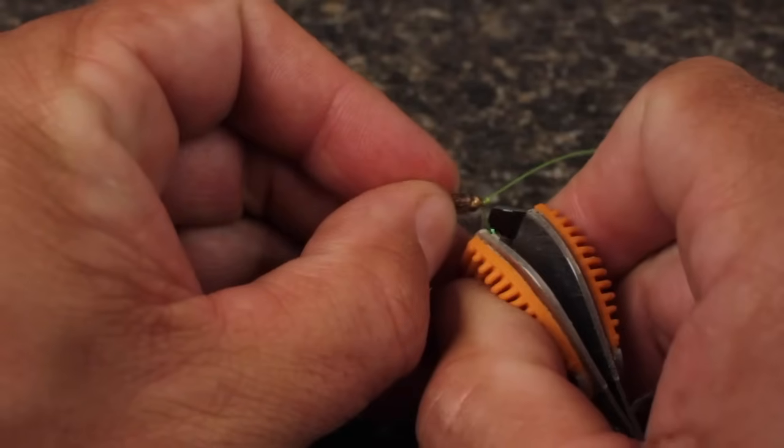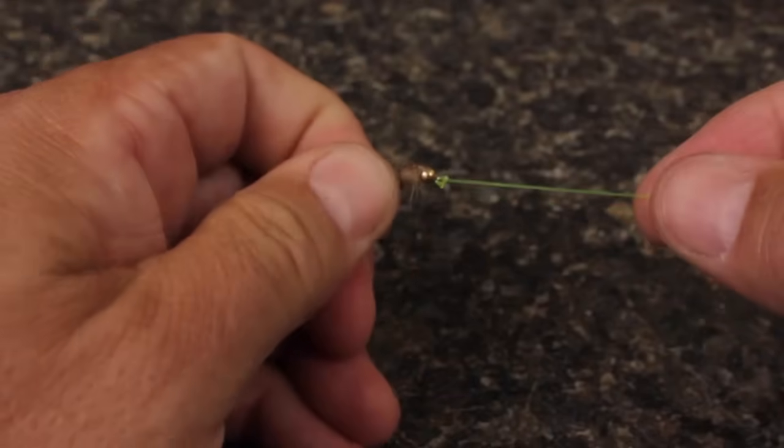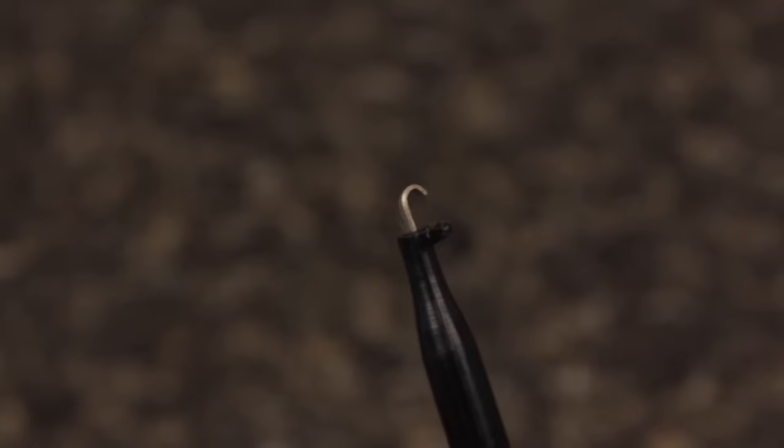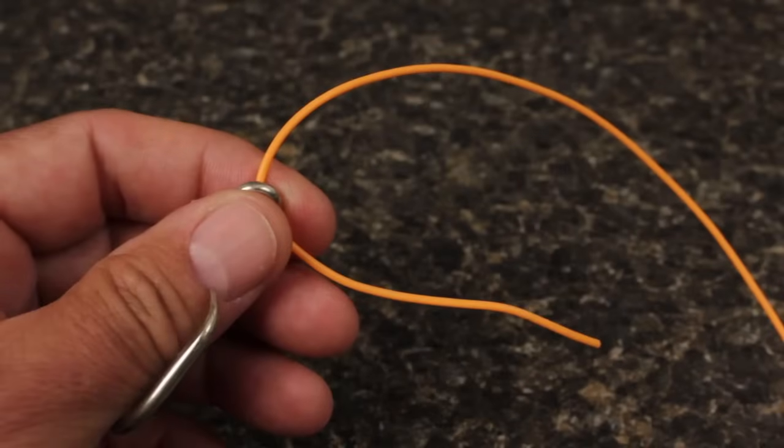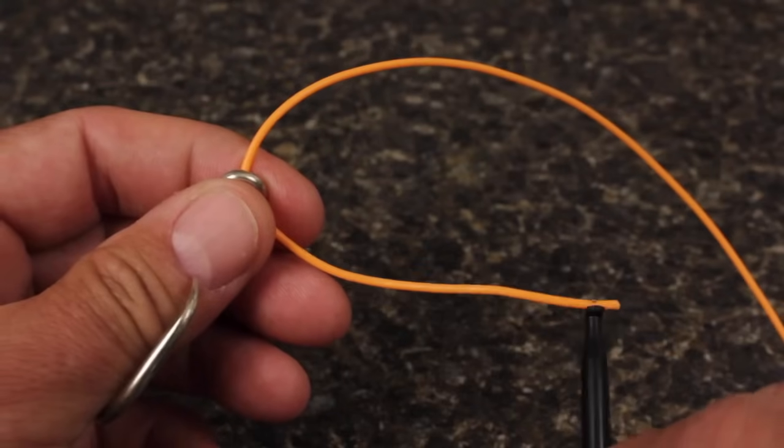You can then reach in with nippers and cut the tag off close. I found a tricky little way to tie a Davy Knot using plunger style hackle pliers. After passing the line through the hook eye, get hold of the very tag end with the hackle pliers.